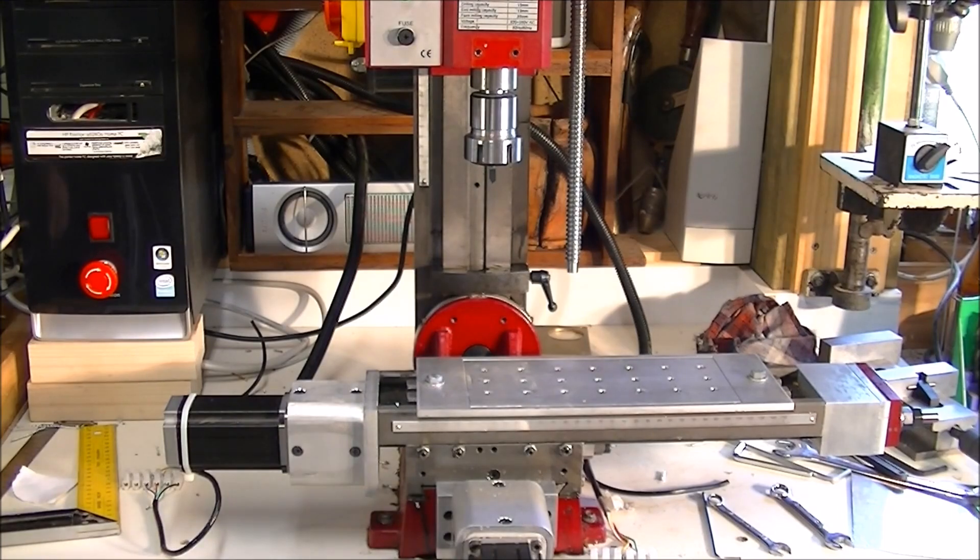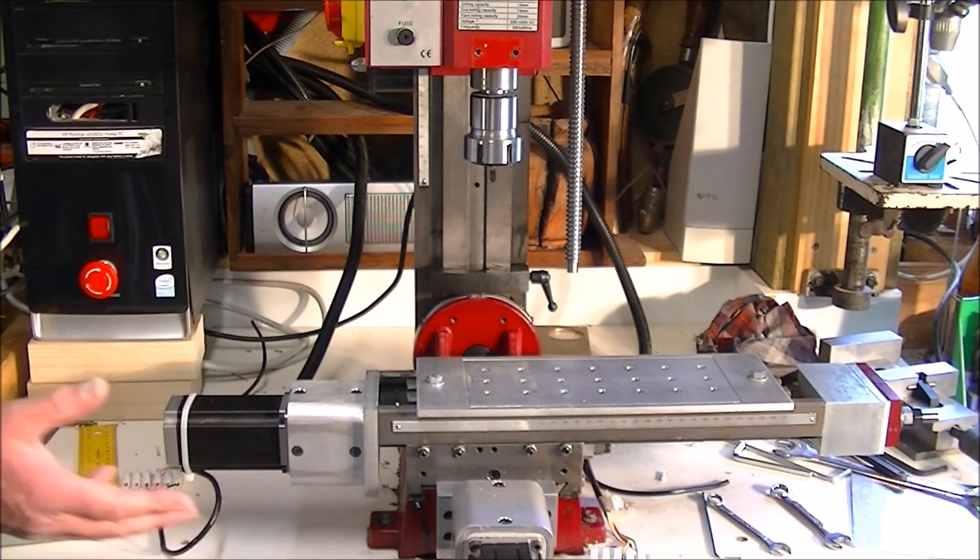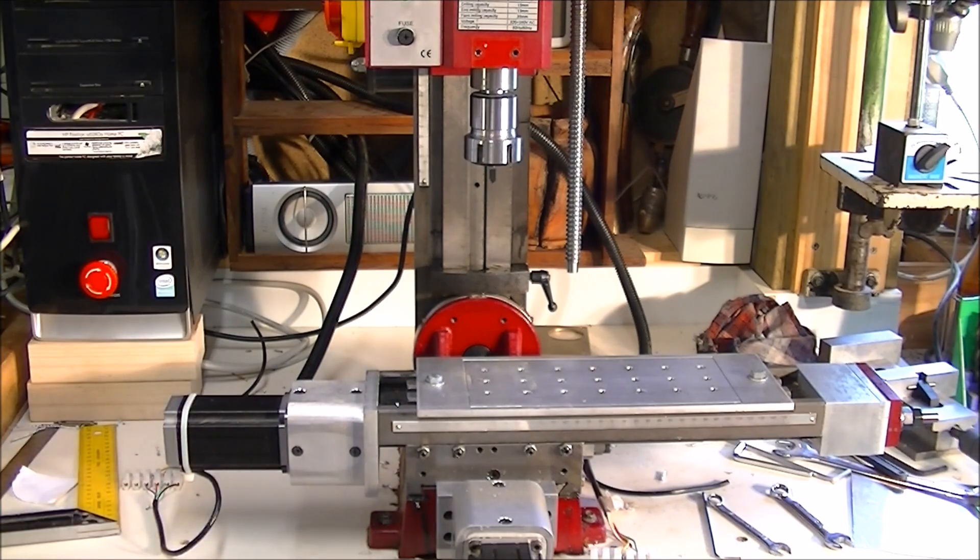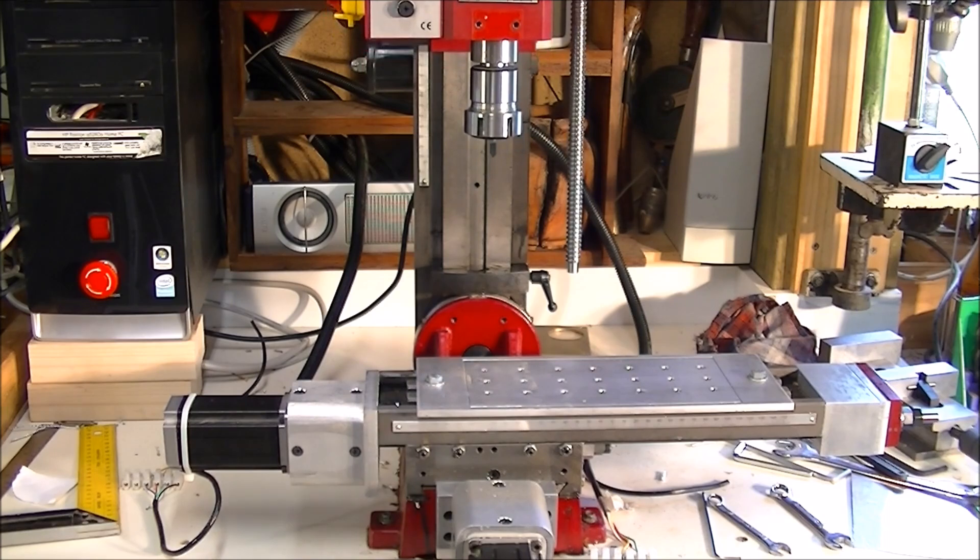I have now taken the machine out of its limits and I am just going to put on fast feed by pressing shift. I am going to take first of all the Z up to its maximum and the soft limits will shut it off as it reaches the boundary that we have set. There you are, Mach 3 has recognized the soft limit and it shut that axis down.